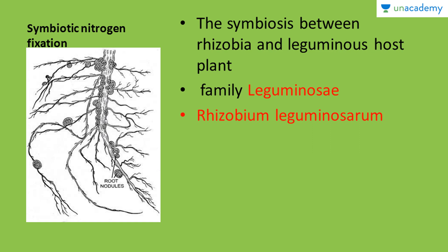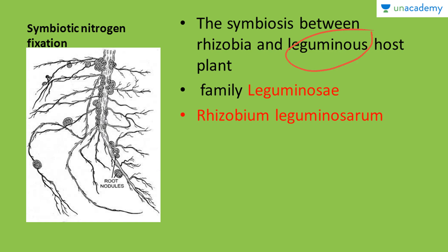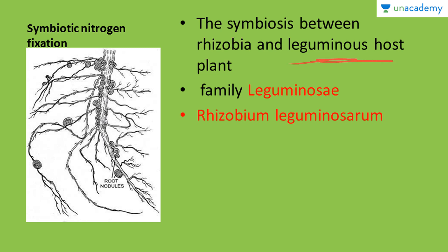So there is a symbiotic relationship. In symbiotic nitrogen fixation, the symbiosis is between the rhizobia and the leguminous host plant. This kind of nitrogen fixation takes place in members of the family Leguminosae, which includes grams, peas, etc. These are known as leguminous plants. The complete name of this nitrogen-fixing bacteria is Rhizobium leguminosarum.